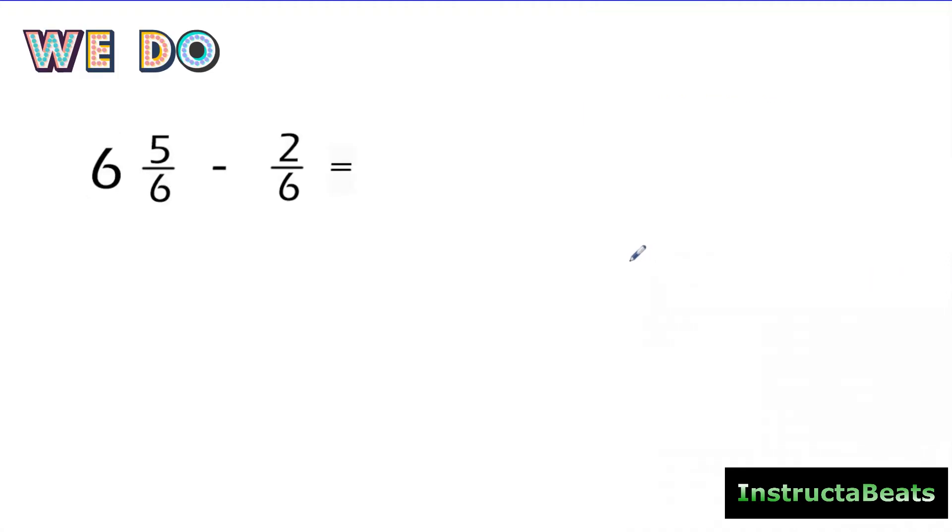Let's take a look at this We Do problem. Make sure it's down in your notes, okay, if you have your notes in front of you. And if you've been with us, you probably already know how to do this. But what happens when we're doing a mixed number minus a fraction? Well, same thing. We're going to follow our steps. We're going to line up our whole numbers and fractions vertically.